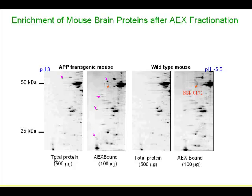A good thing about this: number one, the IEX column capacity is usually very high — this is a prep tool and you can deal with milligrams and milligrams of protein. Number two, the IEX protocol is very quick. This procedure takes about 15 to 20 minutes, and you're done.